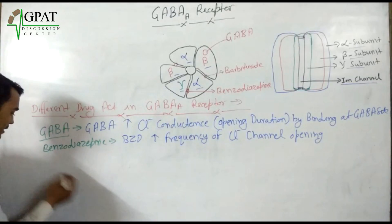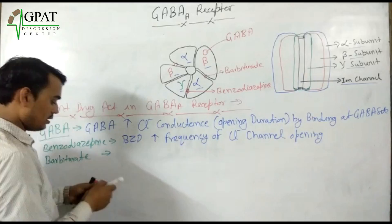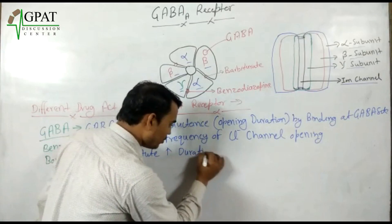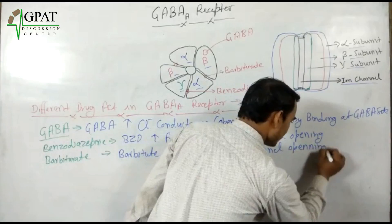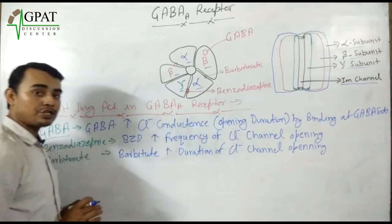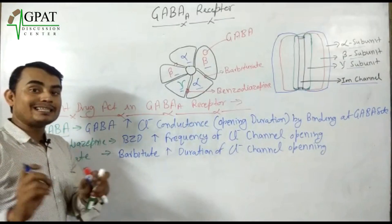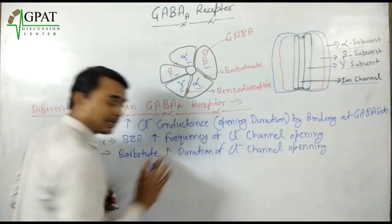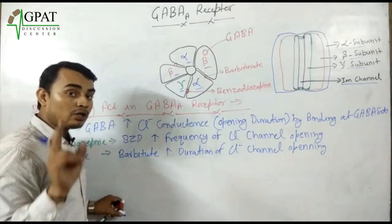Your next drug is barbiturate. What will barbiturate cause? Barbiturate increases the duration of chloride ion channel opening. This is the main difference. Barbiturate increases the duration of chloride ion channel opening, while benzodiazepine increases the frequency. Also, barbiturate can directly stimulate the channel opening, in addition to increasing the duration.